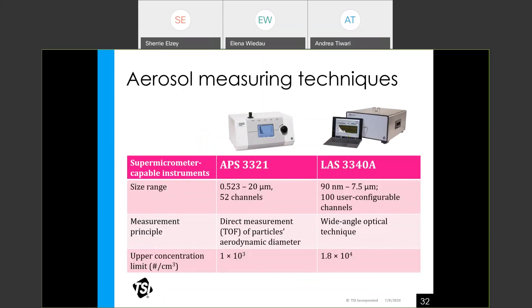Two other instruments are briefly mentioned: the aerodynamic particle sizer (APS) and the laser aerosol spectrometer (LAS). The APS directly measures aerodynamic size using a time-of-flight technique, sizing particles from 0.523 to 20 micrometers with an upper concentration limit of 1000 particles per cubic centimeter. The LAS has a wider size range of 90 nanometers to 7.5 micrometers using an optical technique; while the APS has fixed size bins, the LAS allows user-configurable size channels. Peer-reviewed literature demonstrating use of each for e-cigarette aerosol is shown near the end of the presentation.